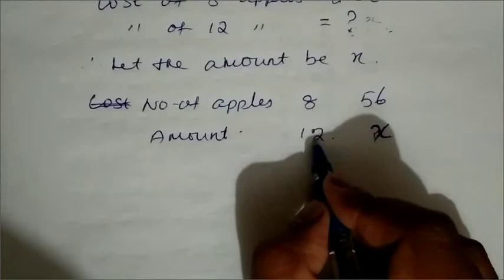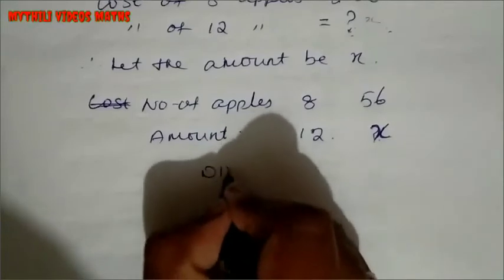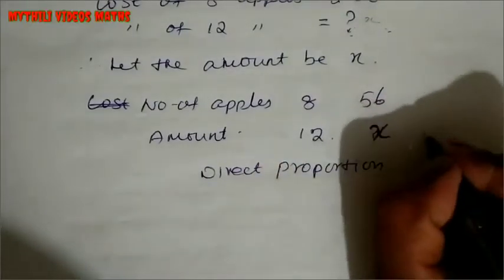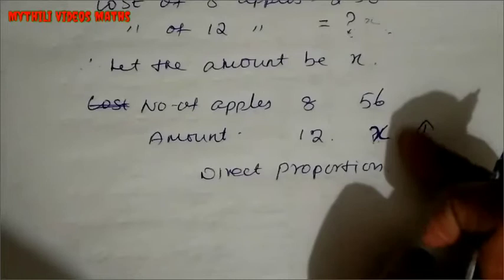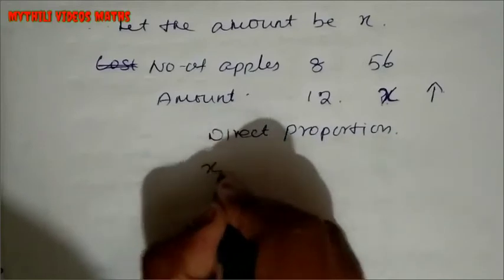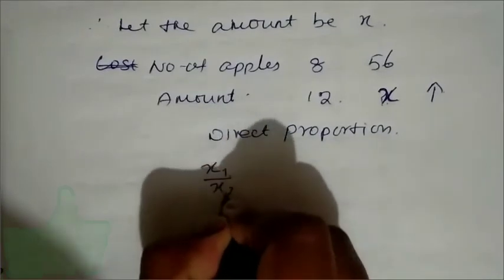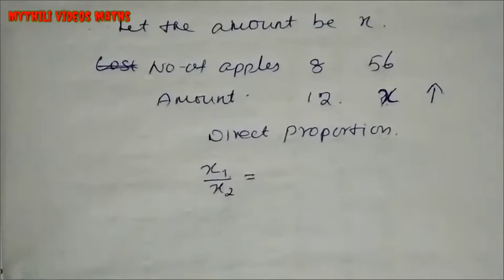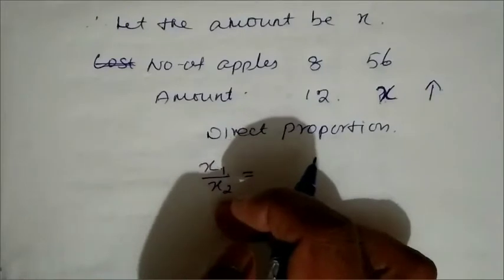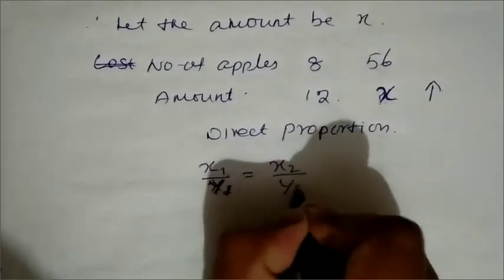Now, apples are increasing, so cost is also increasing — it's a direct proportion. Since it is a direct proportion, we use the formula: x1 by y1 equal to x2 by y2.